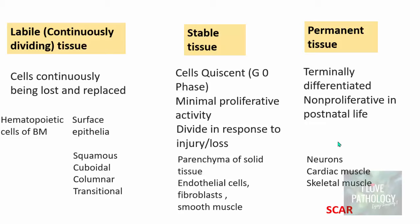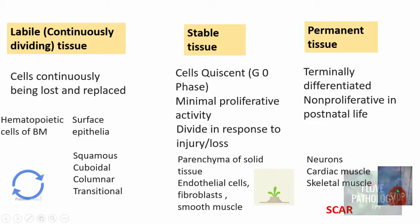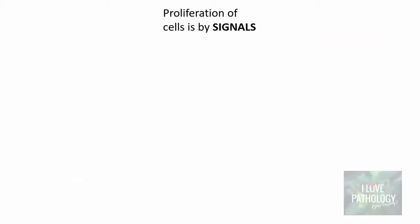In summary, we have three types of tissue. One is labile tissue, where cells are continuously being lost and replaced. Two is stable tissue, which is in the quiescent stage and then assumes proliferative capacity — moving from G0 to G1 phase in response to injury and loss. Three is terminally differentiated cells, which become non-proliferative in postnatal life. These three tissue types are essential for understanding tissue regeneration and repair.